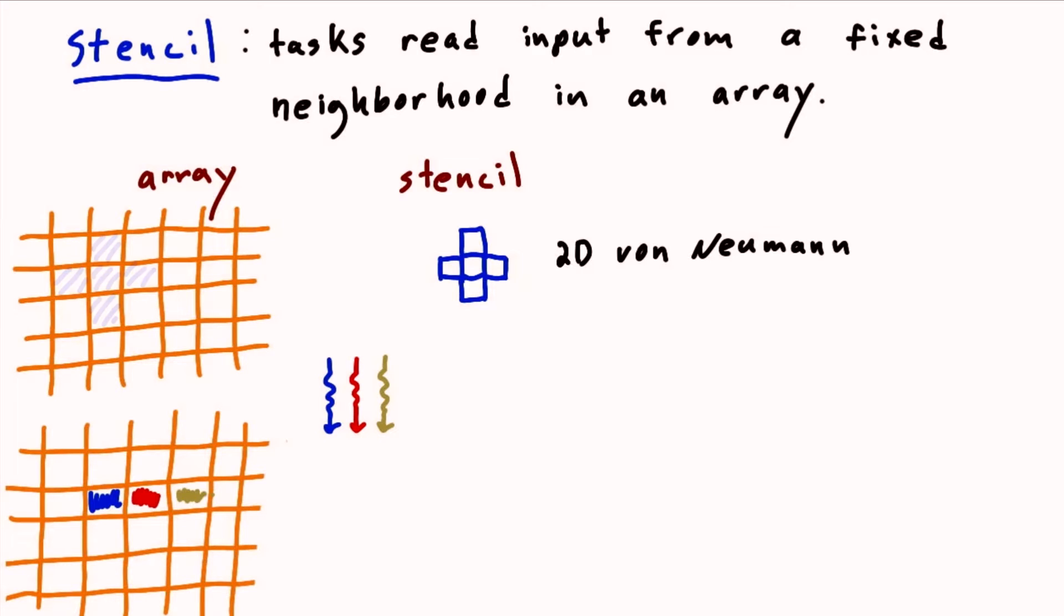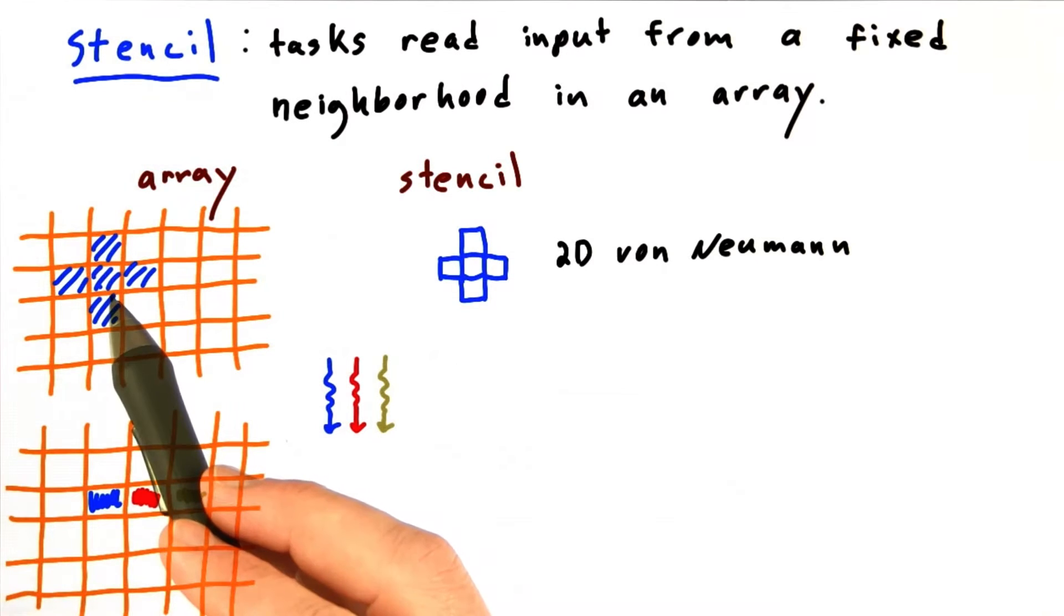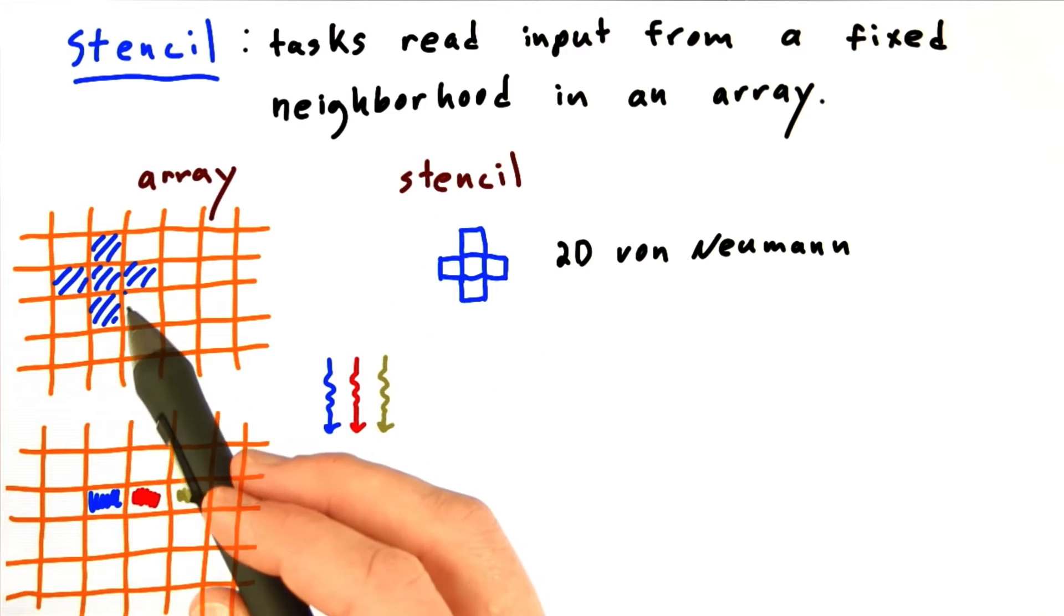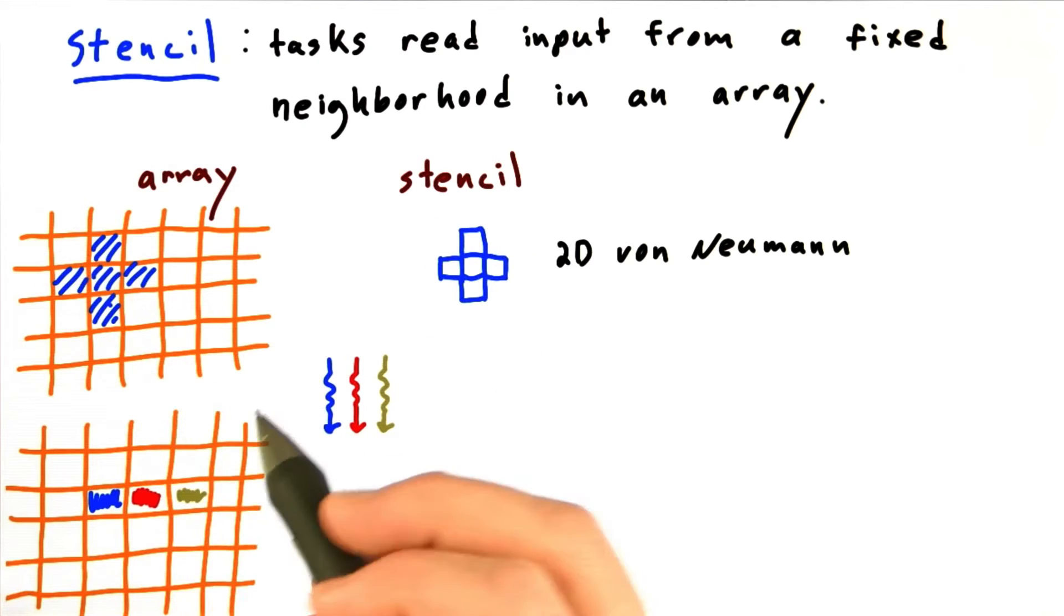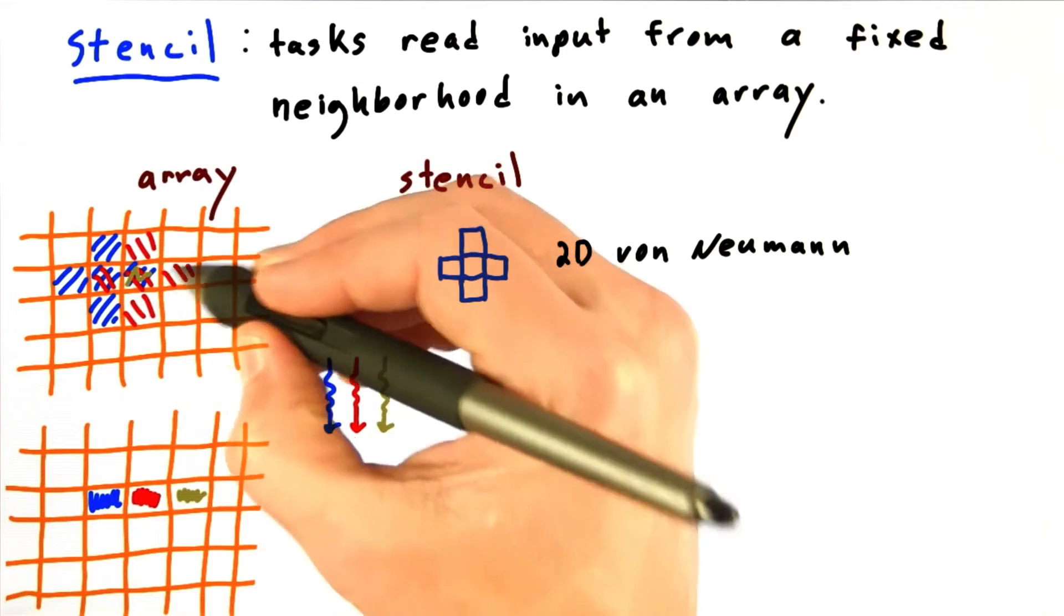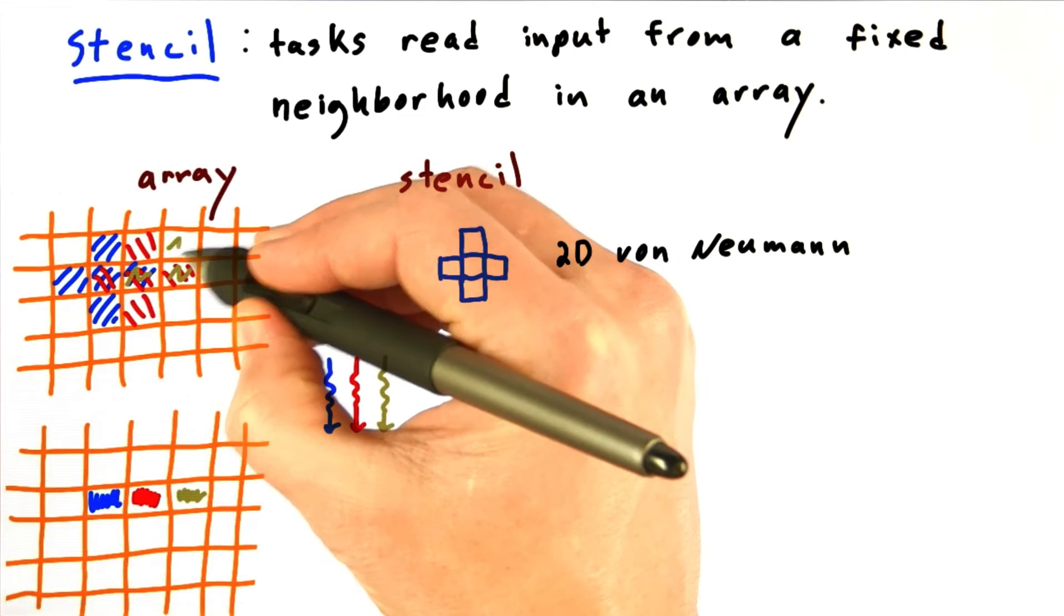If you look at what's going to happen, each of these threads will read from several locations in memory surrounding the corresponding input value, and those locations are defined by the stencil. The blue thread will do a gather from these locations, then the red thread will gather from the overlapping neighborhood, and the green thread will gather from this neighborhood, and so on.